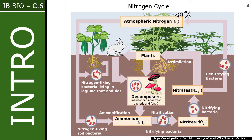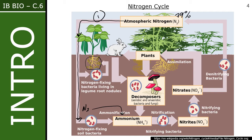Looking at the cycle generally: there are nitrogen-fixing bacteria that take atmospheric nitrogen and convert it into a form usable in the root nodules. Nitrogen-fixing soil bacteria take N₂, the atmospheric nitrogen gas, and convert it into ammonium (NH₄⁺). This process is called ammonification — if it's called ammonification, the product is ammonium.